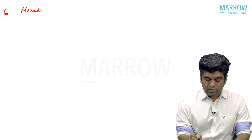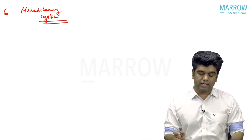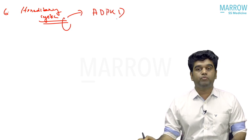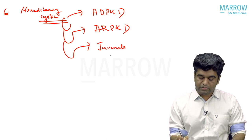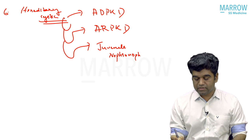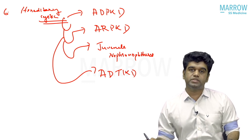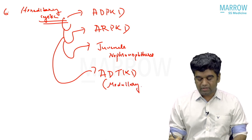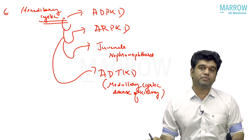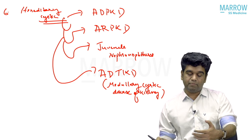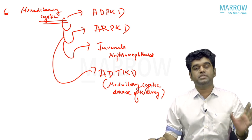Cause number six is hereditary. Hereditary cystic diseases can produce CKD, and when they do, it is typically a CTID-like picture. The most important is ADPKD, second is ARPKD, then juvenile nephronophthisis, and autosomal dominant tubular interstitial kidney disease (ADTIKD) — which includes medullary cystic disease of the kidney. Note: medullary sponge kidney does not produce CKD, so do not include it here.